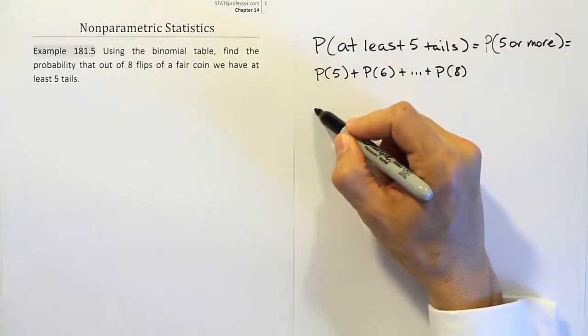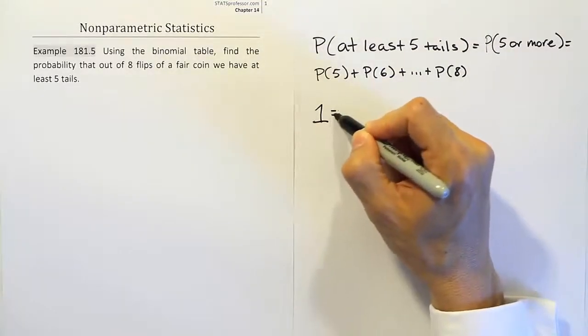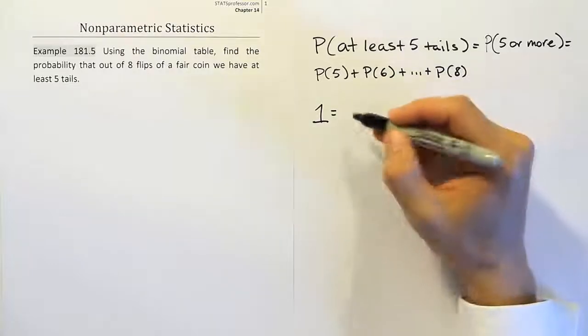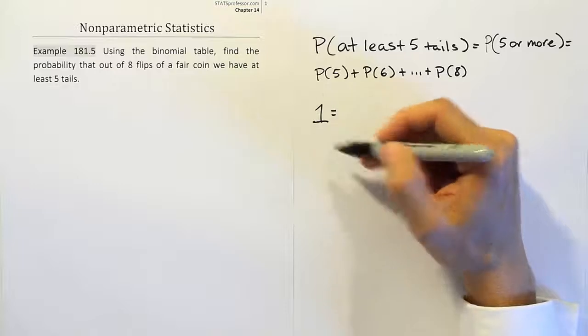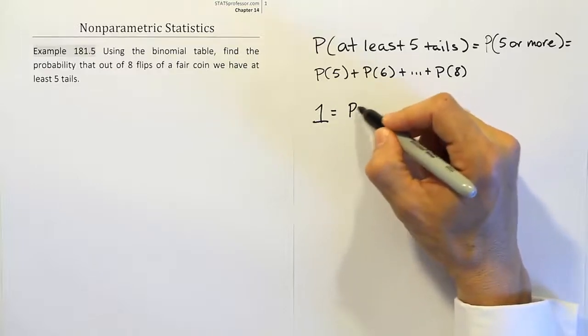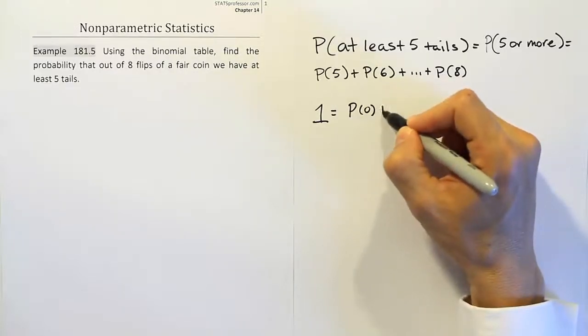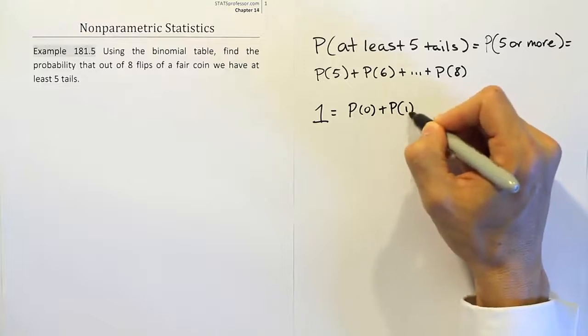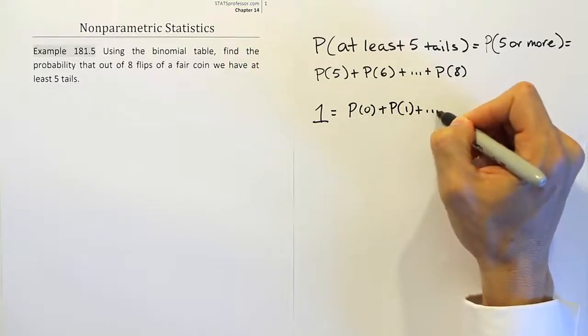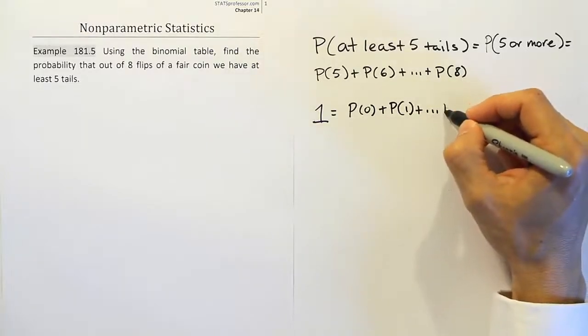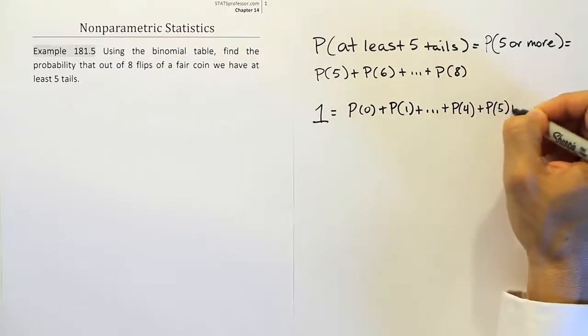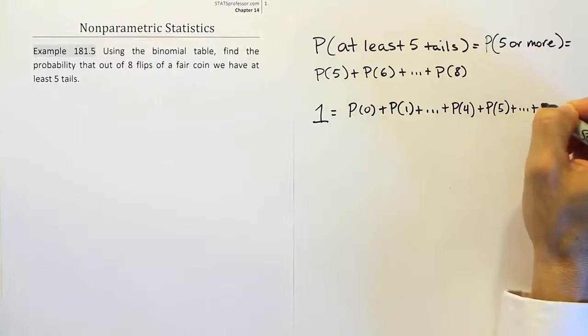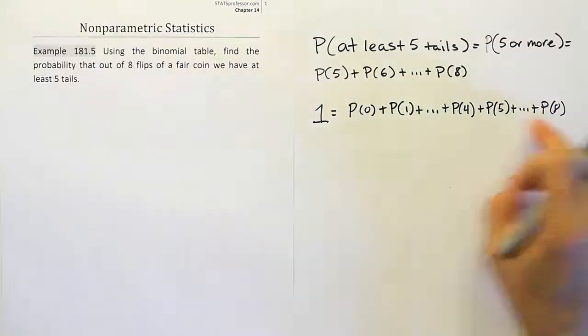So what I'm going to do is remind you of a simple idea, which is that when you have all the possible outcomes, you have all the associated probability, and all the associated probability is one. So if I did the probability that I have zero tails plus the probability that I have one tails, plus dot, dot, dot, all the way up to the probability that I have four tails plus the probability that I have five tails plus dot, dot, dot, the probability that I have eight tails. If I look at all that, those are all the different scenarios.